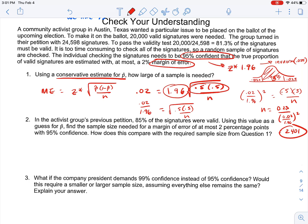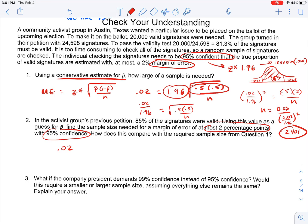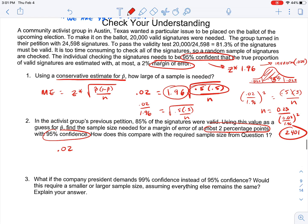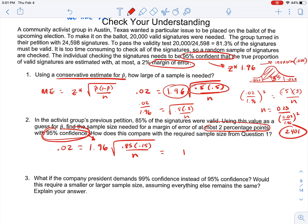So number two: if the activist group's previous petition, 85% of the signatures were valid, using this value as a guess for p hat, find the sample size needed for a margin of error of at most two percentage points with 95% confidence. So now we know something else, and we need to figure out a different piece of the puzzle. So we know that it's 85%, and so we're still going to have 1.96 because our z star value for 95% confidence gives us 1.96. But instead of a conservative estimate that we had up here of .5 and .5, our estimate this time is going to be .85 times .15 over n again.